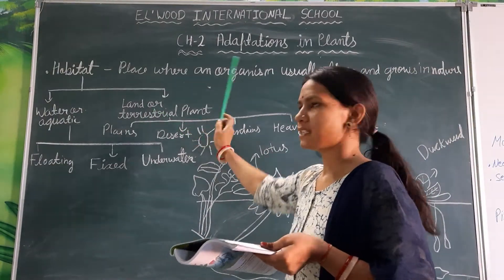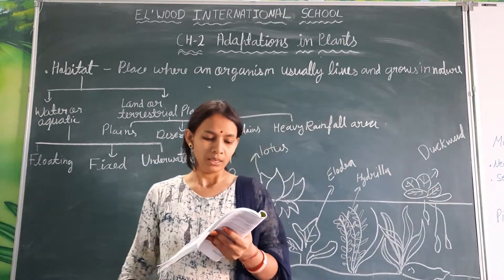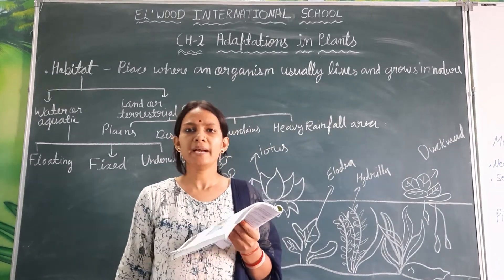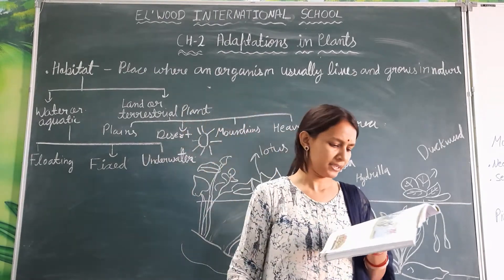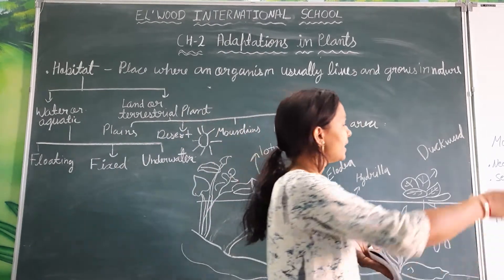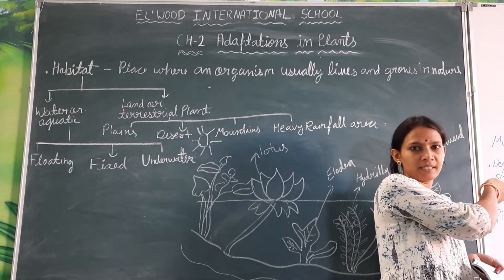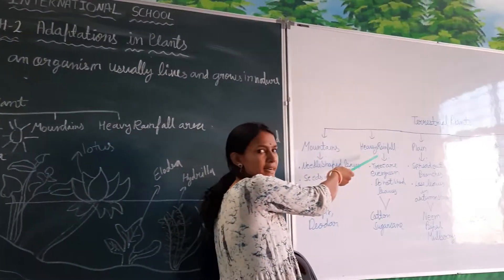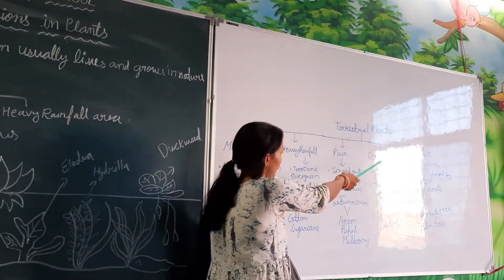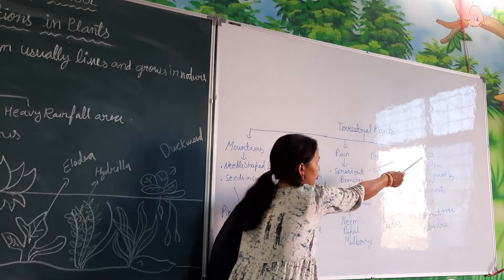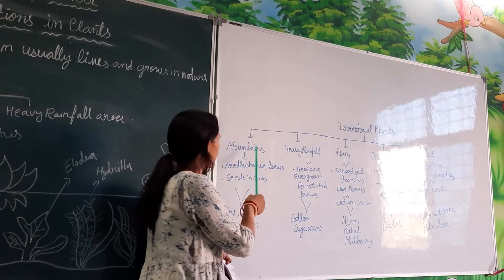Next is land or terrestrial plants. The plants that grow on land are called land or terrestrial plants. Land and terrestrial plants include: plants on mountains, plants where there is heavy rainfall, plants on plains, plants in desert areas, and plants on sea coast areas.